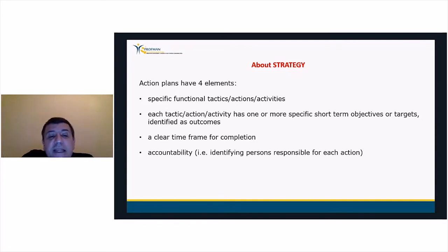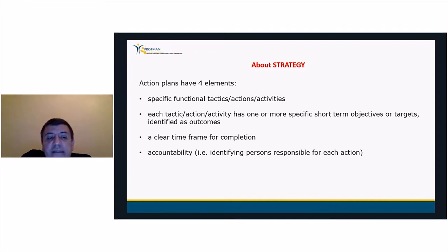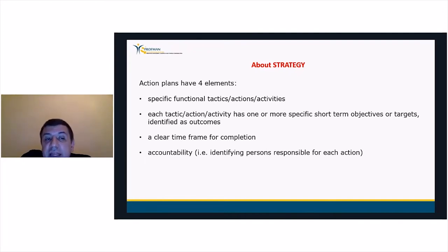Operational planning deals with implementation and support of strategic plans. Action plans are specific actions devised to allow the organization to realize its target priorities. Action plans have four elements: specific functional tactics or actions or activities; each tactic has one or more specific short-term objectives or targets identified as outcomes; a clear time frame for completion; and accountability — identifying persons responsible for each action.